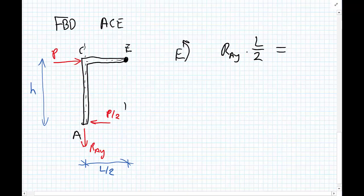And opposing that would be P upon 2 multiplied by the lever arm of H. So P upon 2 multiplied by the lever arm of H, and rearranging this equation we get that RAY equals P H upon L.